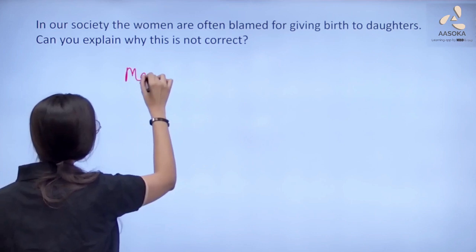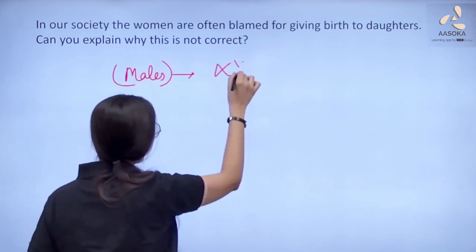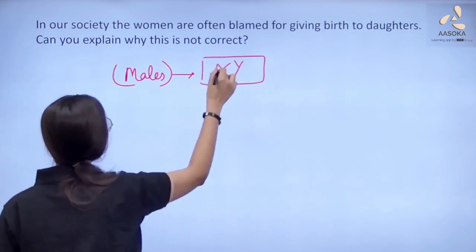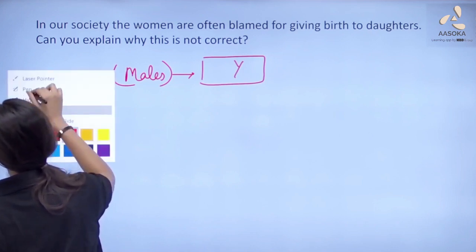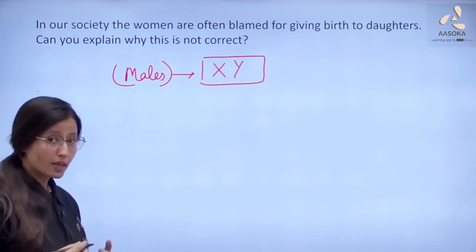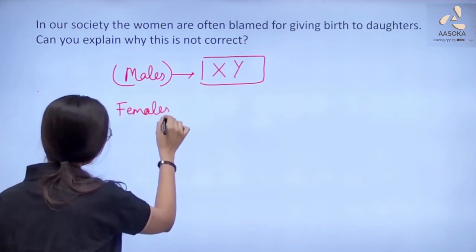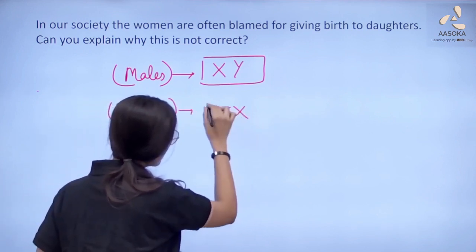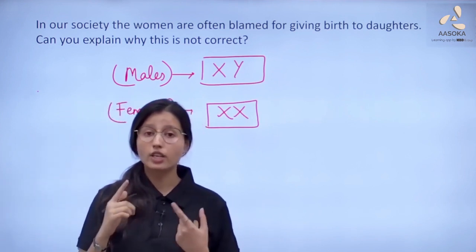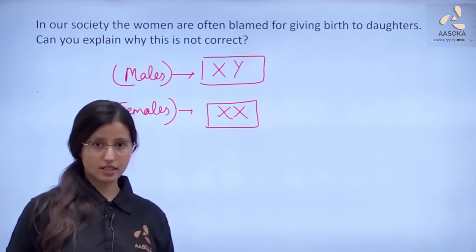In males the sex chromosome is of XY type, but in females the sex chromosome is of XX type. Now, the gender of the child is determined at the stage of fertilization.